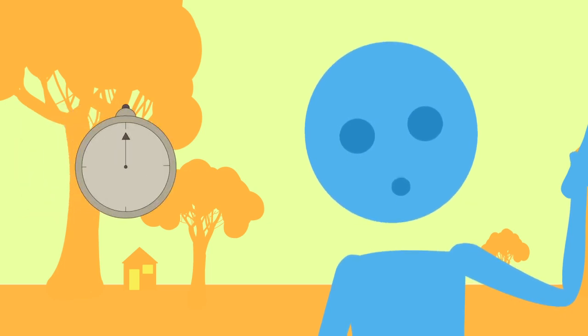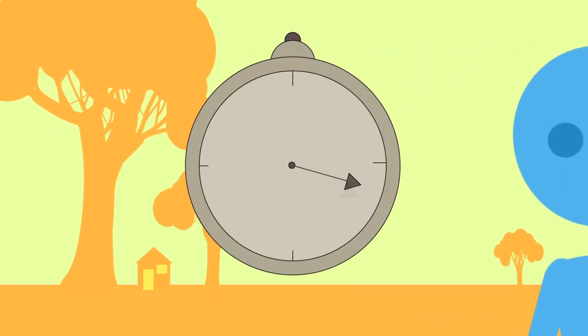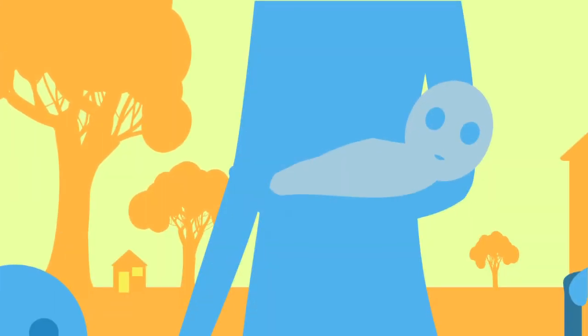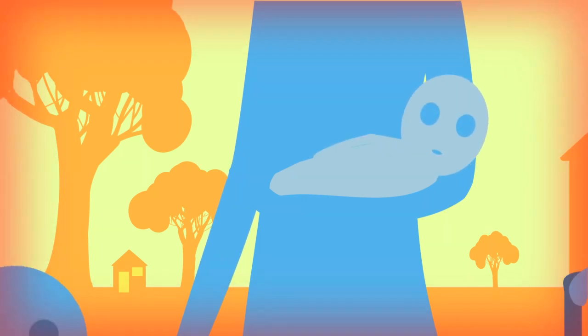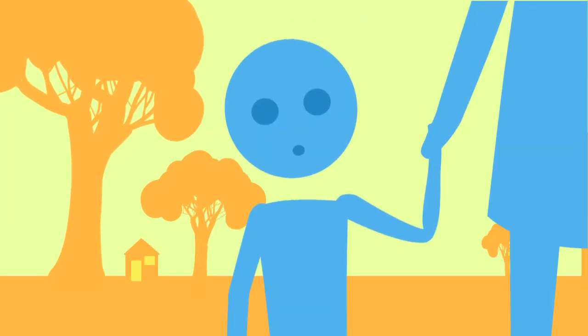Firstly, observe for fast breathing. Count the breaths in one minute. In children aged 2 months to 12 months, the child has fast breathing if it's 50 breaths or more per minute. In children aged 12 months to 5 years, it is considered fast if it is 40 breaths or more per minute.